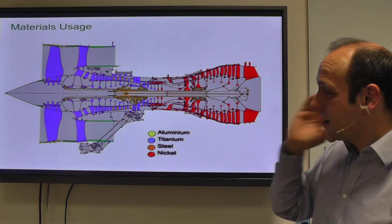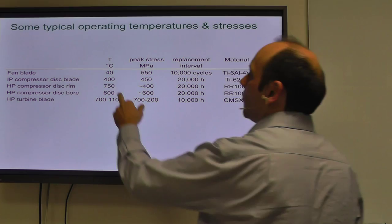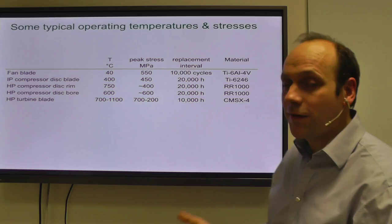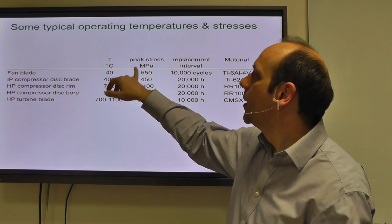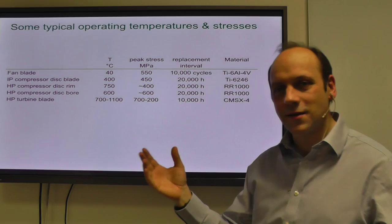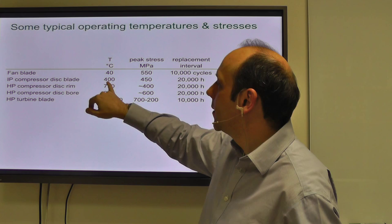For typical operating temperatures and stresses: for the fan blade at the front, you're at a temperature anywhere from minus 60 to plus 80 degrees C, let's say 40. The peak stress there is about the run-out fatigue strength of the alloy, about 550 MPa, and that will last something like 10,000 cycles because of erosion from being grit-blasted by sand in the air. As we come into the compressor, we get hotter; the stresses drop a little, and they'll last around 10,000 to 20,000 hours.